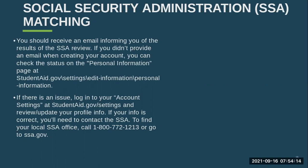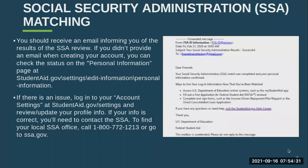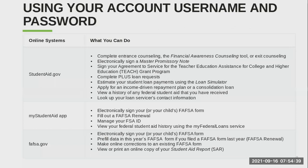You will receive an email informing you of the results of the Social Security Administration review. If you didn't provide an email, you can check your status on the personal information page at studentaid.gov. Your FSA ID can be used at studentaid.gov, the MyStudentAid app, or FAFSA.gov. With it, you can complete entrance counseling, the financial awareness counseling tool, or exit counseling — all for loans and grants. You can also use it to electronically sign a master promissory note, or sign the TEACH grant agreement to service for those who want to become teachers.